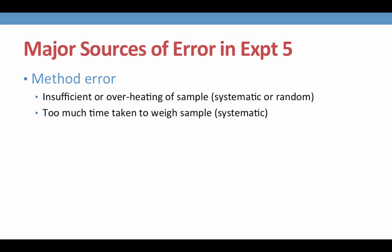On the other hand, overheating of the sample, allowing some of the sample to pop out, would also be systematic, or could be random if it doesn't happen every time. Another method error would be taking too much time to get to the balance before weighing your sample. All hydrates attract water, that is why they are hydrates, and so if we leave an anhydrous salt out in the air for too long, it will begin to gather water molecules back into itself, thereby increasing its mass.